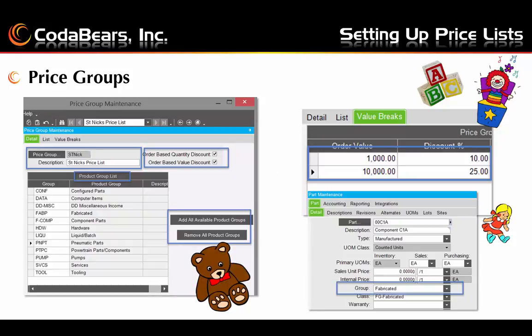Here we show we set up St. Nick's price group. Since he's almost on the way, the options to use both quantity and value based discounts are selected. On the right, we can see an example of the value breaks: the somewhat naughty elves who only order a thousand dollars of toys will get a 10% discount. The nice elves who plan to send out $10,000 of toys get a larger 25% discount for any toys in these product groups. The elves need to make sure that the parts in Part Maintenance belong to one of these product groups to activate the group pricing — so jack-in-the-boxes, dollies, teddy bears, and all other toys need to be in one of these product groups to get the St. Nick pricing.